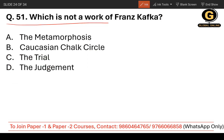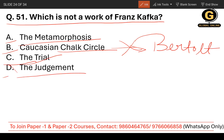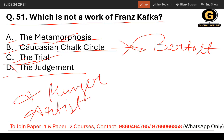Question number 51: Which is not a work of Franz Kafka? The options are Metamorphosis, Caucasian Chalk Circle, The Trial, and The Judgment. Caucasian Chalk Circle was written by Bertolt Brecht, not Kafka. Metamorphosis, The Trial, and The Judgment are all works of Franz Kafka. Other works of Kafka include A Hunger Artist and The Castle. So the correct answer is Caucasian Chalk Circle.